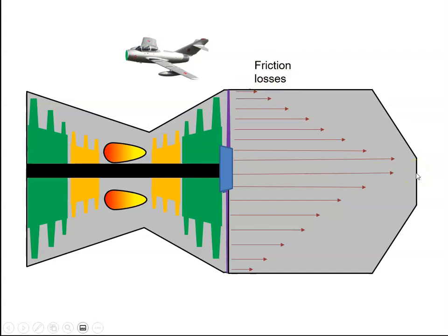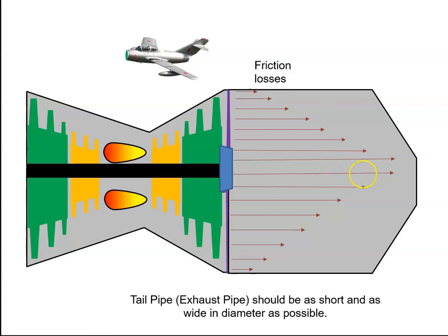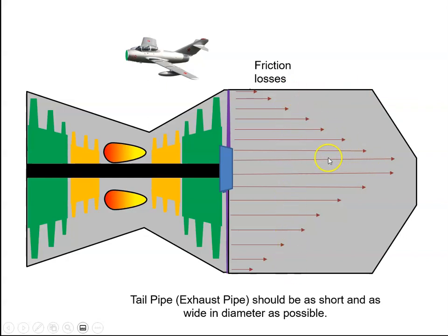So how can we reduce the friction losses? We can try to keep the tail pipe or exhaust pipe as short as possible and try to keep the diameter as large as possible. If we have a large diameter the velocity of the gases will reduce, and if we have lower velocity then the friction losses will be less.